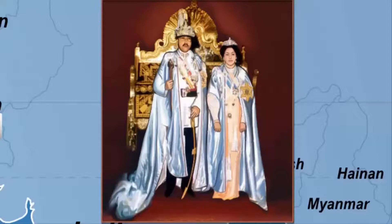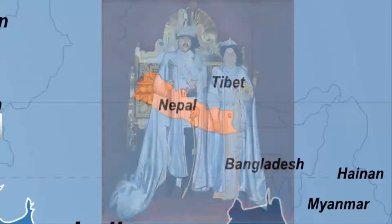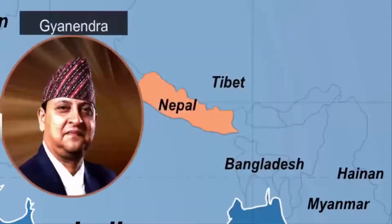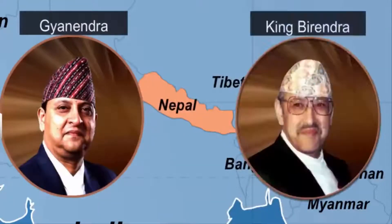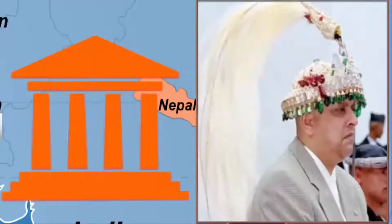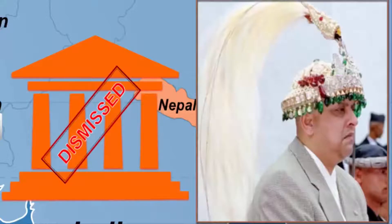However, Gyanendra, the elder brother of King Birendra, was not in favor of democratic rule. Taking advantage of the political turmoil following the death of the king, he dismissed the elected government and declared himself as the new king.